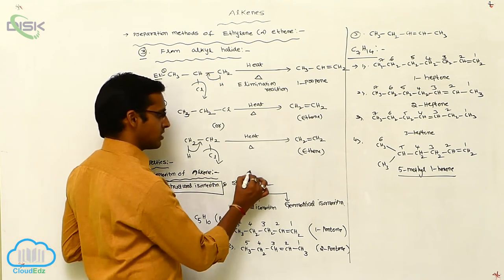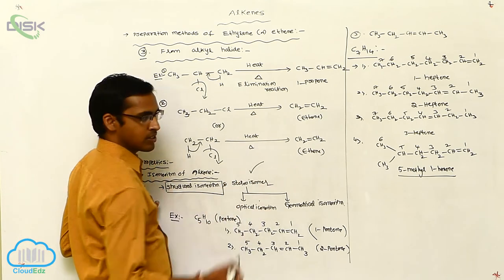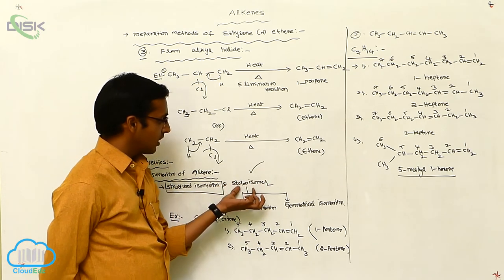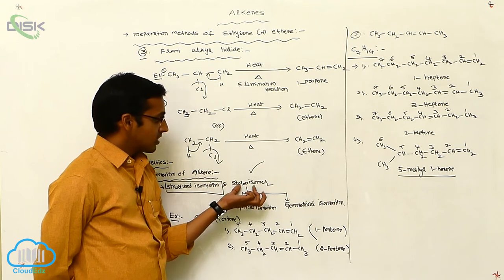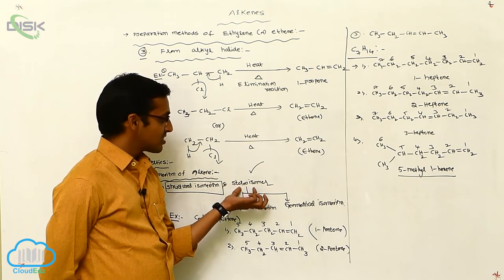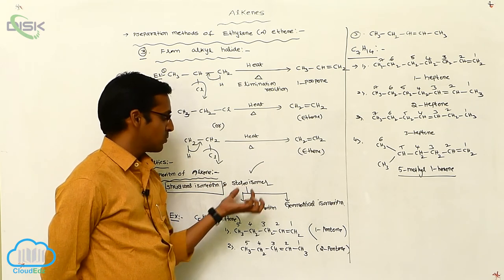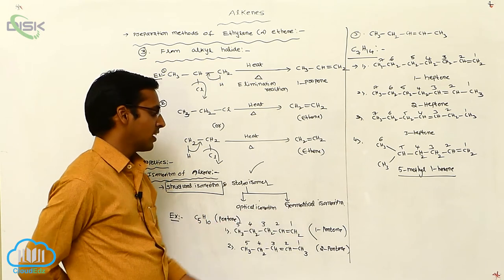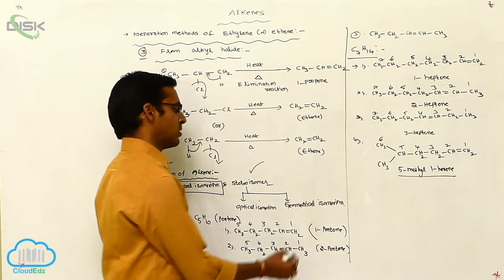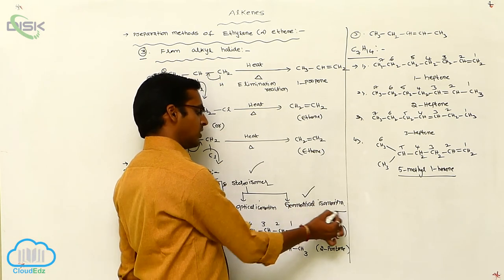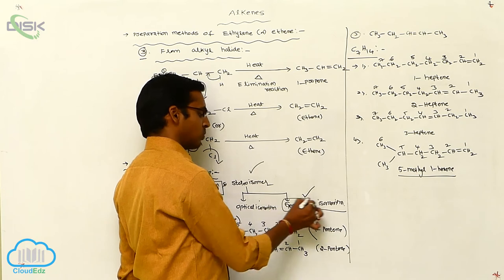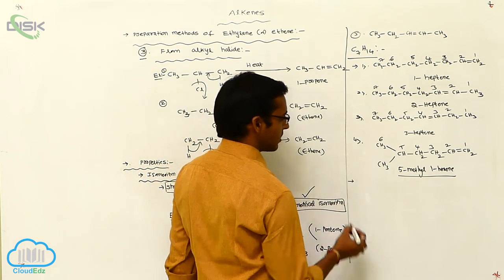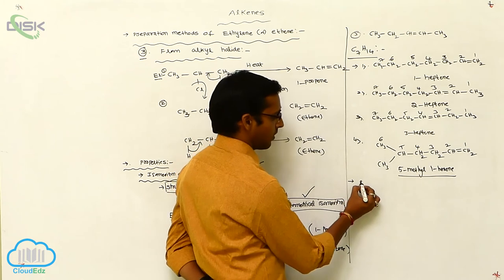Now we discuss stereoisomerism. Stereoisomerism means differing in three-dimensional structures. There are two types: optical isomerism and geometrical isomerism. We will discuss only geometrical isomerism. Geometrical isomerism has two types of isomers.